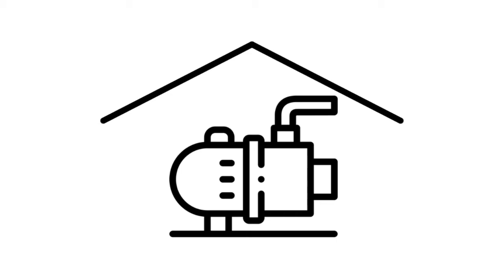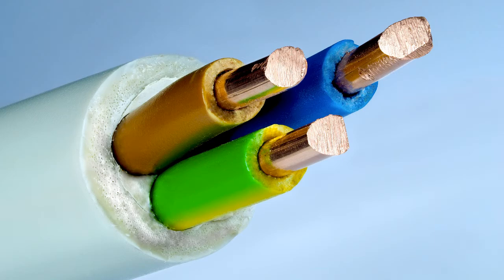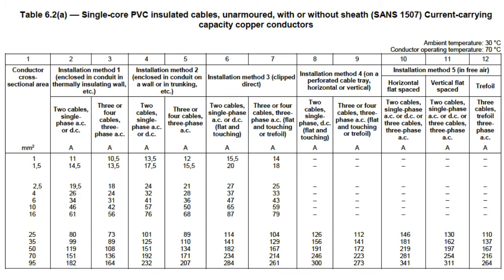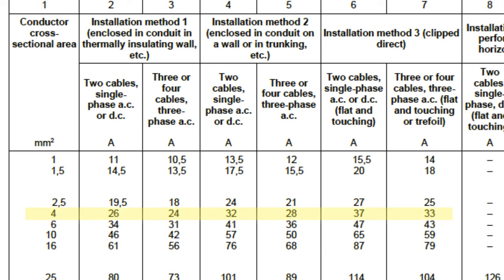So those are the specific requirements relating to pool pumps, but there are still a few things we need to know. Firstly, what kind of cable can we use to provide power to the pool pump from the main distribution board? Section 6.2, carrying capacity of conductors, has the answers and tells us that different kinds of cables can carry different currents over different distances when installed in different ways. Part of this section is table 6.2, which tells us the current carrying capacity of single core unarmoured PVC insulated cables. If our pool pump was ready to draw 22 amps, we would use this table to figure out what size cable we need — it looks like we would need a 4 mm² cable, but this depends on the installation method: method 1, 2, 3, 4 or 5.